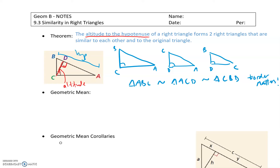For example, the third root of 8 — you're asking yourself, what's the same number multiplied by itself three times to get 8? That's 2. Or the fourth root of 81 — what's the same number multiplied by itself four times to get 81? That's 3. So 2 cubed equals 8, and 3 to the fourth equals 81. That's the idea of an nth root.